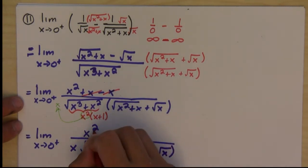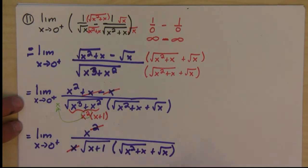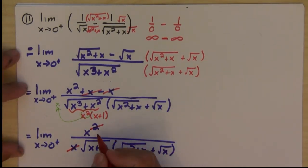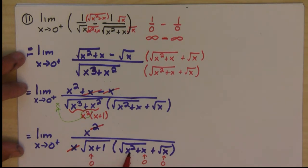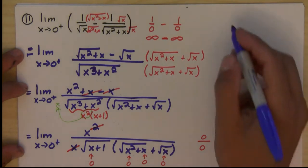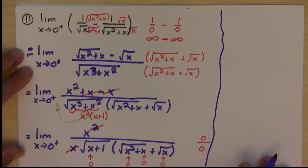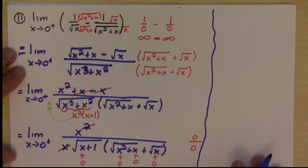And if I now plug in 0, I would get, here I have 1, 0 plus 0 plus 0. So on the numerator, I would have 0. On the denominator, I would also have 0. So this is still an indeterminate form, which means that I haven't quite solved the problem yet.